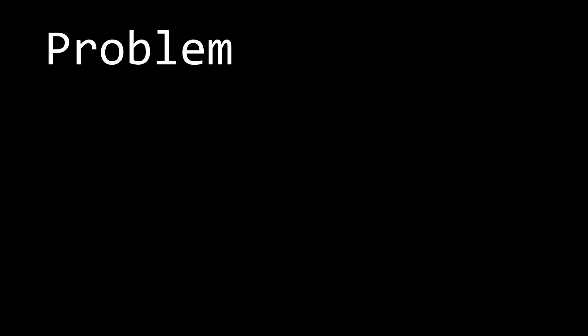So to start off, what we need to do is understand the problem. Given an 8x8 chessboard, find all possible configurations of placing 8 queens so that they do not attack each other. A queen can attack another queen if it is in the same row, or in the same column, or in the same diagonal.